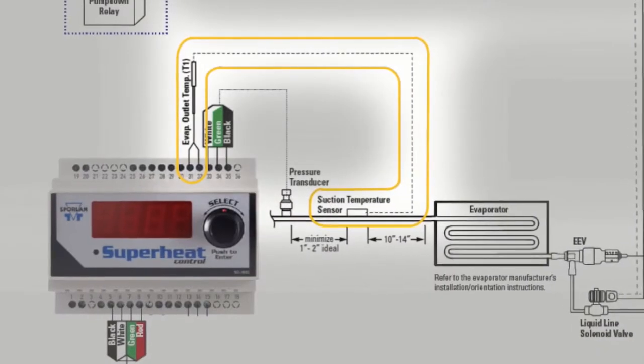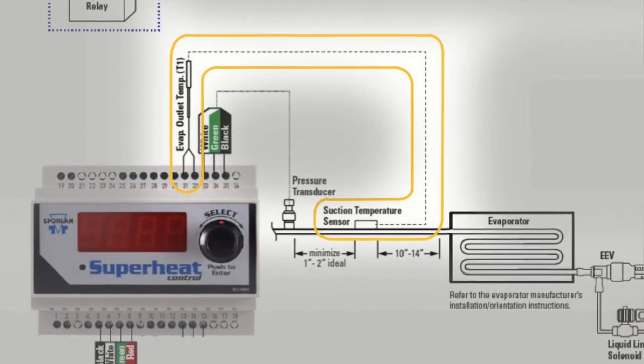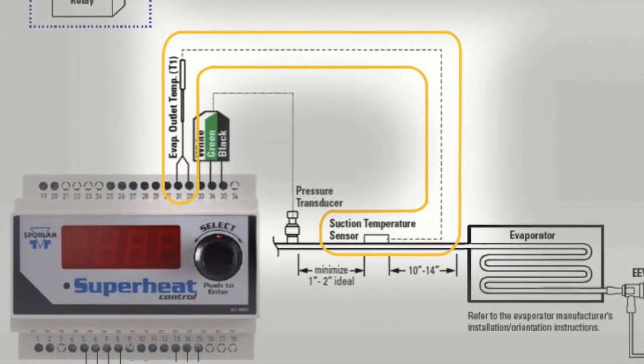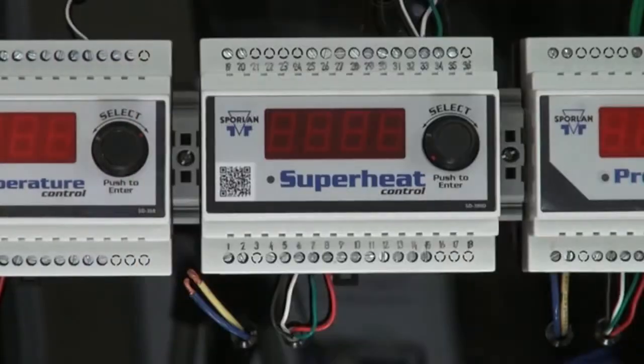The sensor should be installed 10 to 14 inches from the heat exchanger, minimizing the distance from the pressure transducer. Then we can connect the wires to terminals 31 and 32.